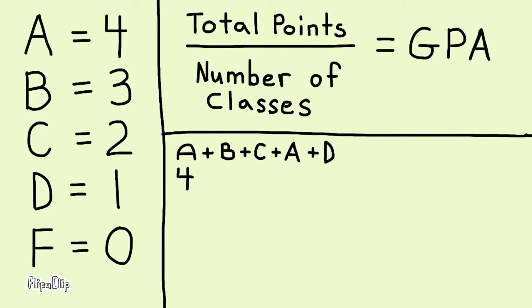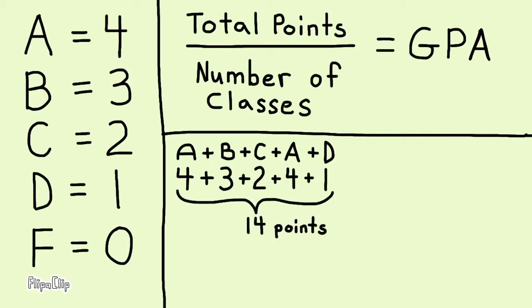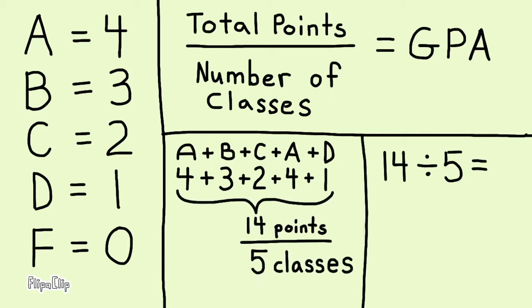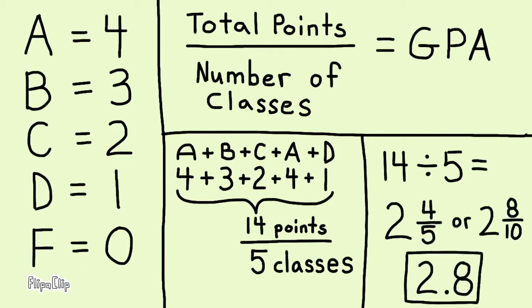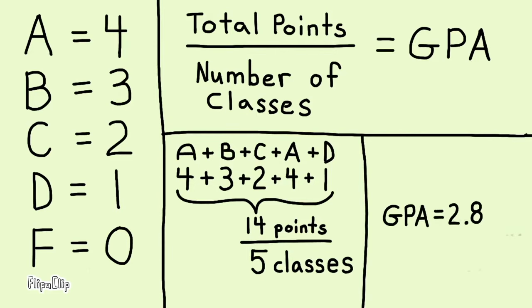That would be 4 points plus 3 points plus 2 points, plus 4 points plus 1 point — a total of 14 points divided by 5 classes. Since 14 divided by 5 equals 2.8, your grade point average would be 2.8.